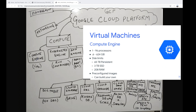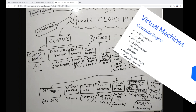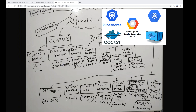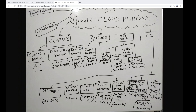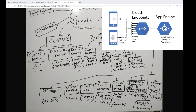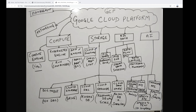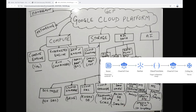Kubernetes Engine is used to run and orchestrate containers for large, heavy applications — you can manage all the containers using this compute Kubernetes Engine service. App Engine is also very popular; if you want to deploy a big heavy application with multiple dynamic components, you use App Engine services. Cloud Function is just like AWS Lambda — it's a serverless service provided by GCP.